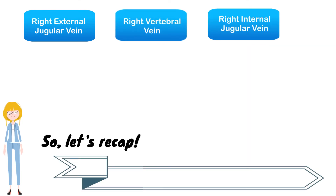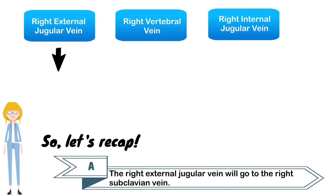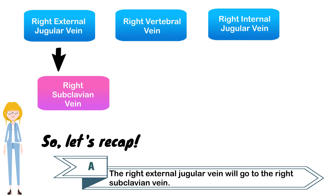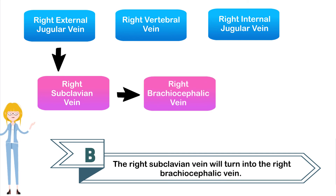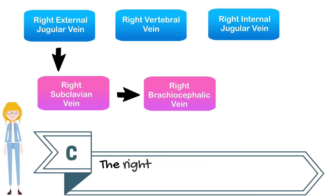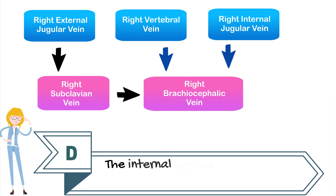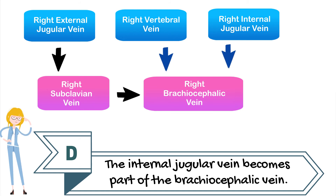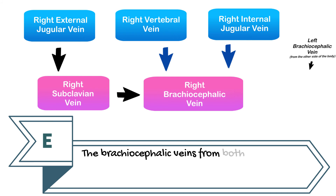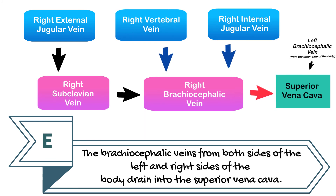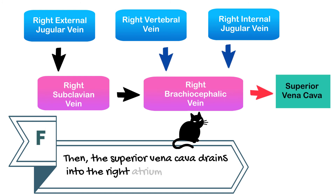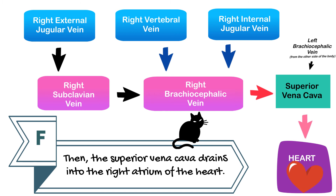So let's recap. The right external jugular vein goes to the right subclavian vein. The right subclavian vein becomes the right brachiocephalic vein. The right vertebral vein drains into the right brachiocephalic vein. The internal jugular vein becomes part of the brachiocephalic vein. The brachiocephalic veins from both the left and right sides of the body drain into the superior vena cava. Then the superior vena cava drains into the right atrium of the heart.